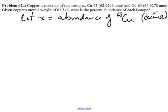In a similar way, let's identify y as the abundance of the isotope copper-65, also in decimal form.